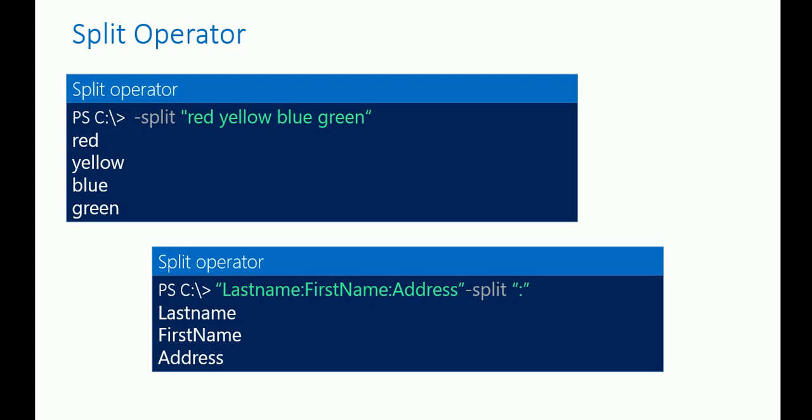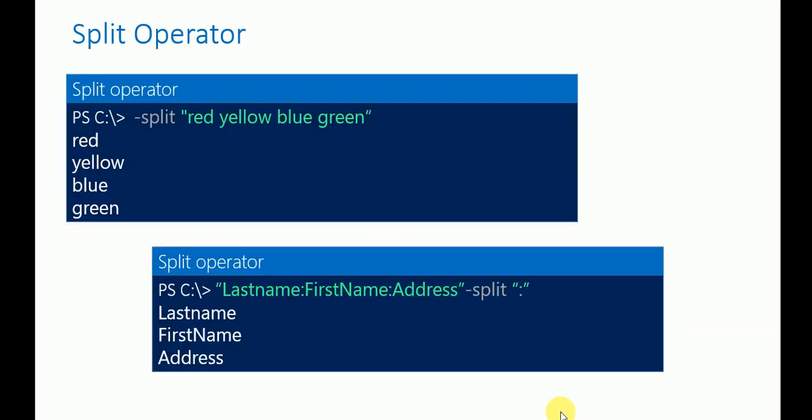Another example: if your input value is 'last name colon first name colon address' and you split on the colon delimiter, the output will be 'last name', 'first name', and 'address' — each as a separate item.